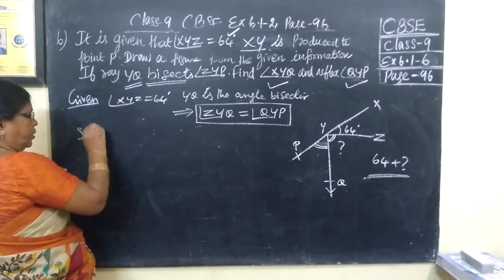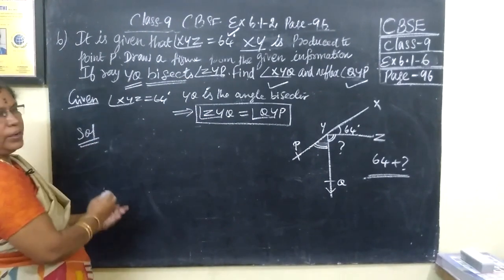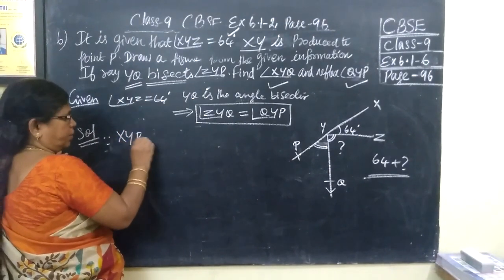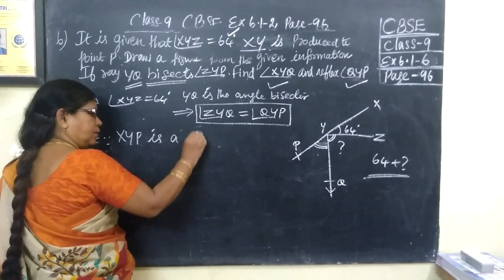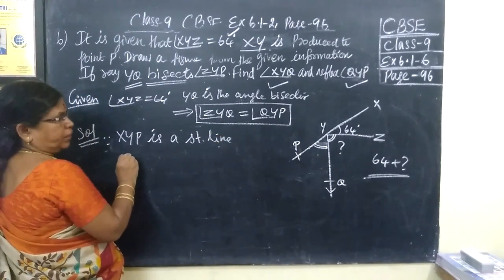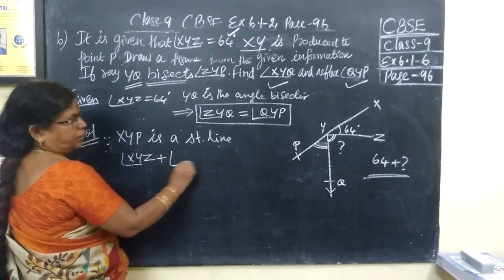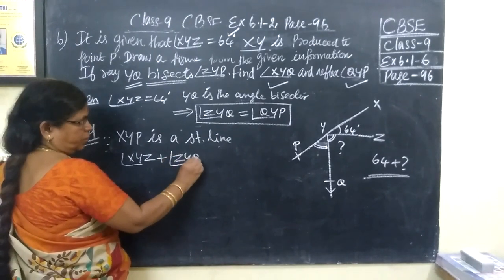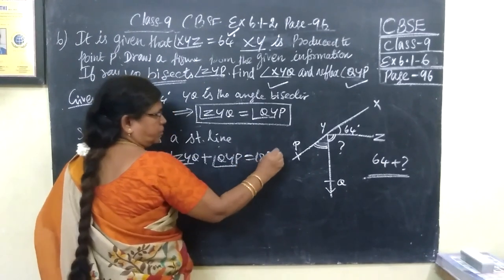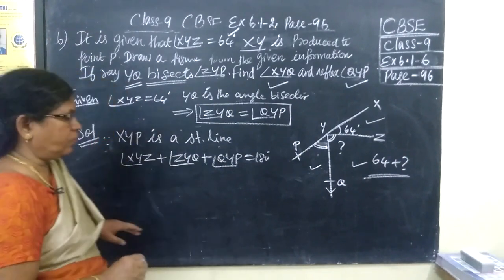Now every time we are using the property sum of the angles on a straight line is equal to 180 degree. Since XYP is a straight line, we know sum of the angles is equal to 180 degree. What are the angles? XYZ, the next adjacent angle ZYQ, the next is QYP. Sum of these three angles, this one, this one and this one, is equal to 180 degree.